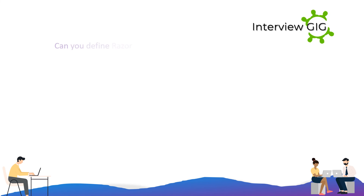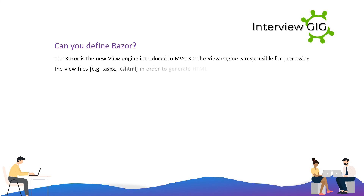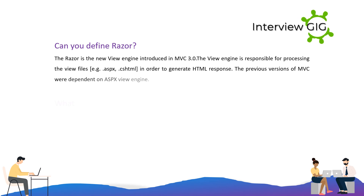Can you define Razor? Razor is the new view engine introduced in MVC 3.0. The view engine is responsible for processing the view files, for example .cshtml, in order to generate an HTML response. The previous versions of MVC were dependent on the ASPX view engine.